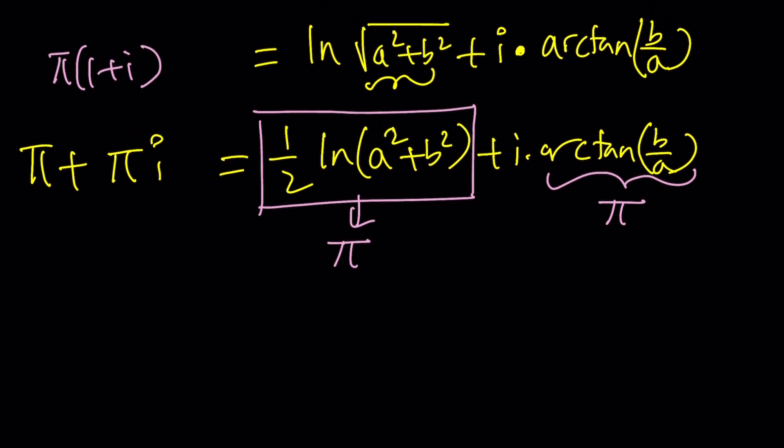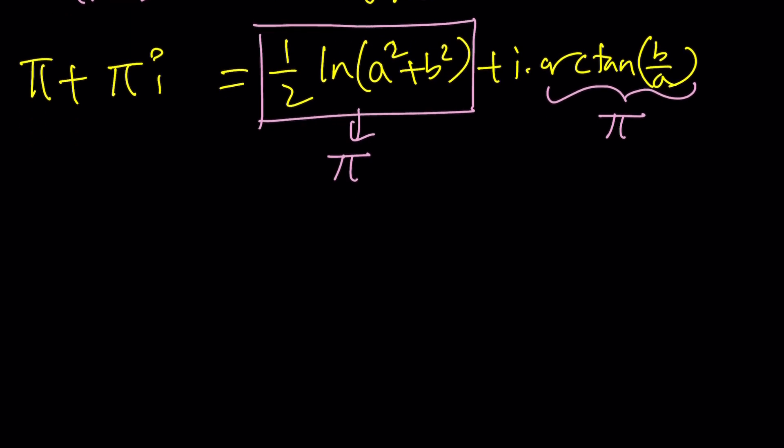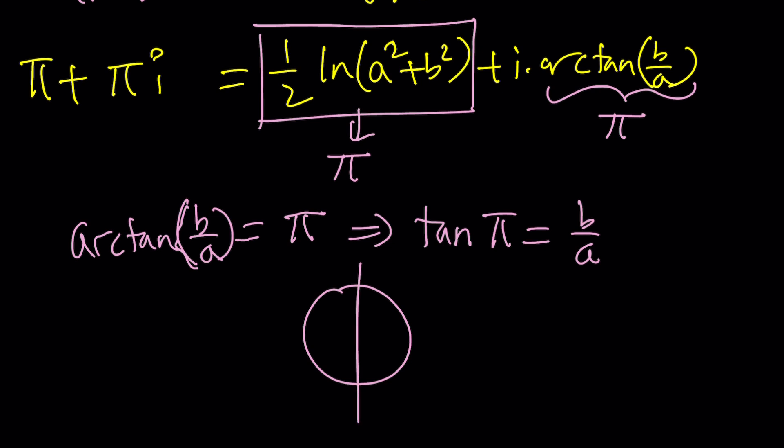So now, by comparison, what are we getting? First of all, arctan(b/a) = π, which is nice. And then if you tan both sides, tan(π) = b/a. That's interesting. What is tan(π)? What is tan(0)? Isn't that zero? tan(π) is also zero, right? If you think about it, how do you find the tangent?